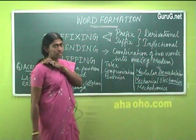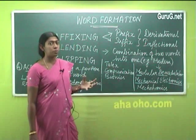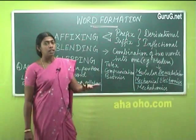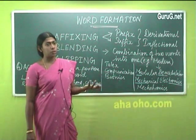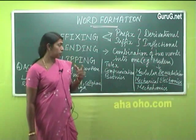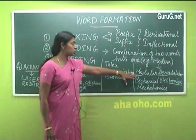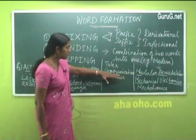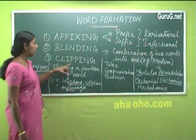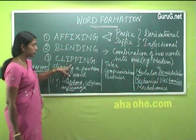You combine two words together by cutting out portions of both words and taking the rest of the letters together. This process is called blending. For the sake of easy communication, we do it — communication should be comprehensive, and for easy understanding we have this process. The third type through which we form words is called clipping.